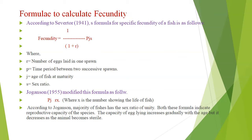We have a formula to calculate fertility. Savatel suggested this formula: Fecundity = 1 / (1 + r·p·j·s), where E-raj is the number of eggs laid in one spawn, p is the time period between two spawns, j is the age of fish at maturity, and s is the sex ratio.